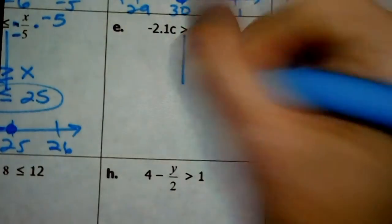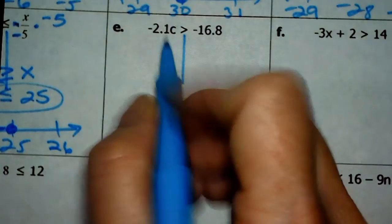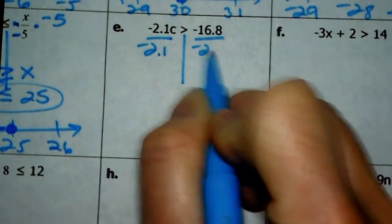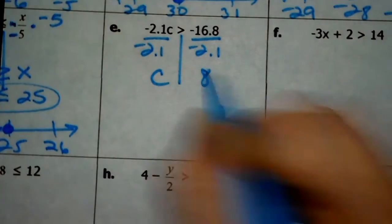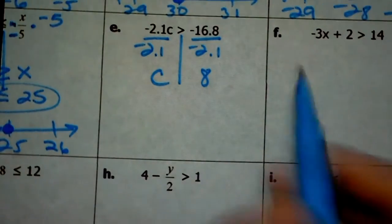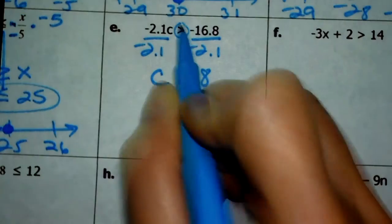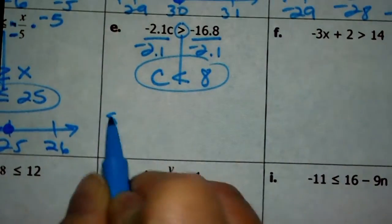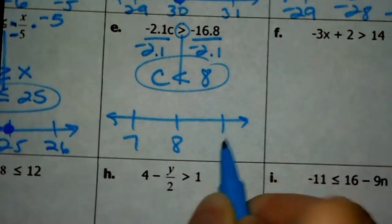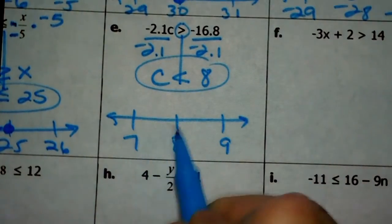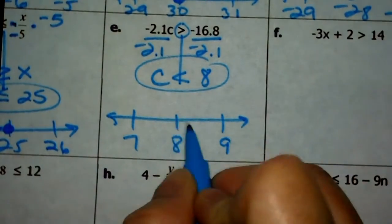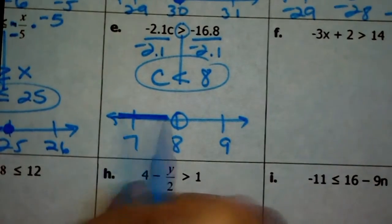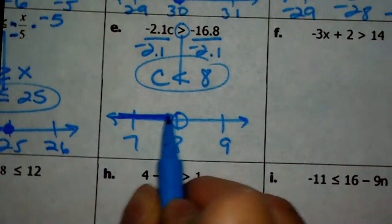Next: I have negative 2.1c. I need to divide by negative 2.1 in order to get rid of that. When you take negative 16.8 and divide it by negative 2.1, you get 8. Because I had to divide by negative 2.1 to solve it, I'm going to flip this sign — it was greater than to start, now it's less than. For the graph, I put 8 in the center with 7 and 9. If c is less than 8, it can't be 8, so open circle and shade to the left.